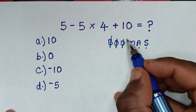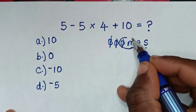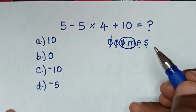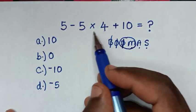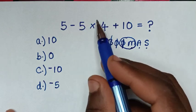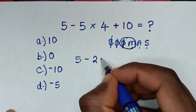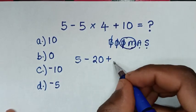So, we'll start to deal with this group of division and multiplication, whereas we don't have division, so we'll deal with multiplication only, of 5 times 4, which is 20. So, it will be 5, then minus 20, plus this, 10.